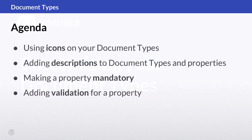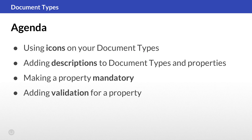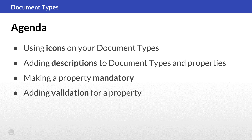Let's have a quick look at the agenda. We'll start by seeing how using icons on your document types can spice up the content section. Then we'll make it even easier for our content editors to work with content by adding descriptions to our document types and properties. Next up we'll be making a property mandatory, and finally we'll be adding some validation to a property.